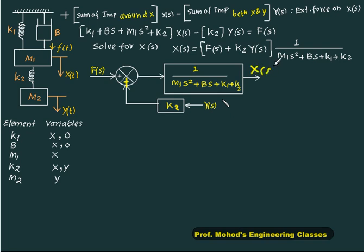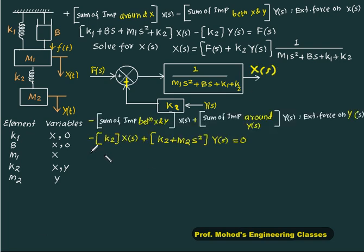When the second equation we write, between x and y the common element is equal to minus k2, and sum of impedance around y of s. You have to check the list of y, one is k2, one is m2. So we have impedance of k2 is k2 and m2 is m2 s square, y of s. Let us solve this equation for y of s. Y of s is k2 upon m2 s square plus k2 multiplied by x of s.